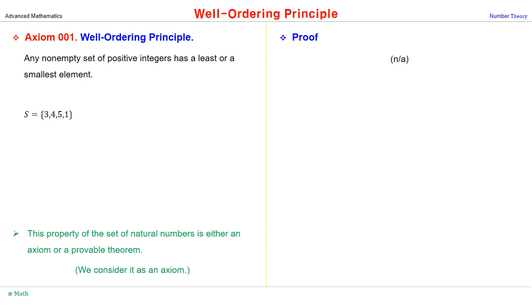The well-ordering principle is a basic and very important axiom in number theory, which states that any non-empty set of positive integers has a least or smallest element.